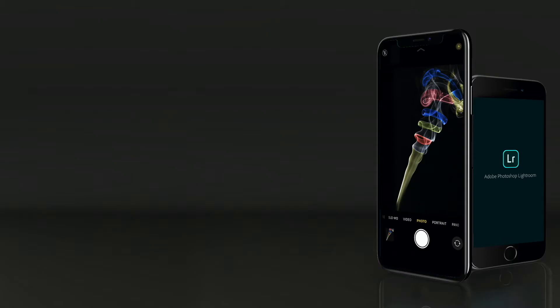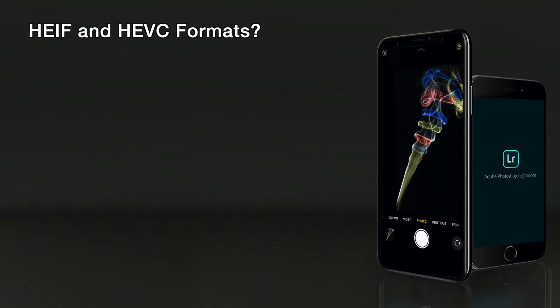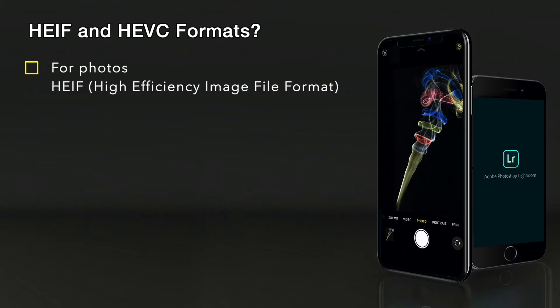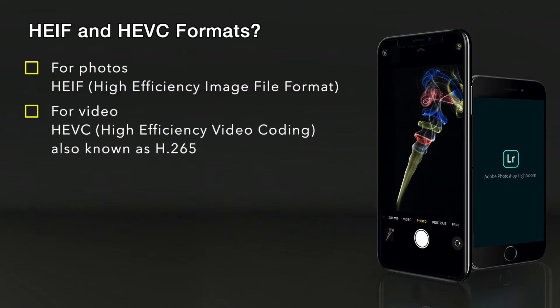We now come down to formats. Now formats with the HEIF and the HEVC — what does this mean? This is going to get a little bit techy, but back when iOS 11 and the Mac OS High Sierra was upgraded by Apple, they introduced two new industry standard media formats: the high efficiency image file format for photos, and the high efficiency video coding for videos.